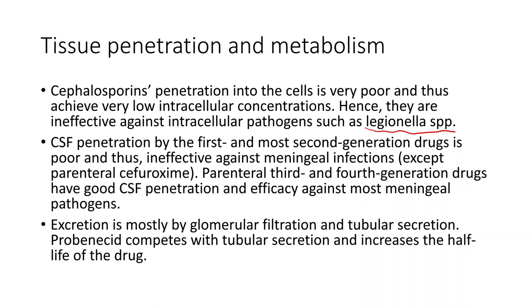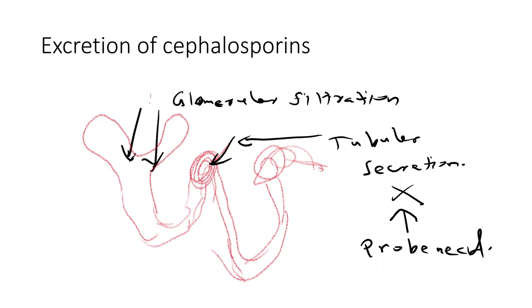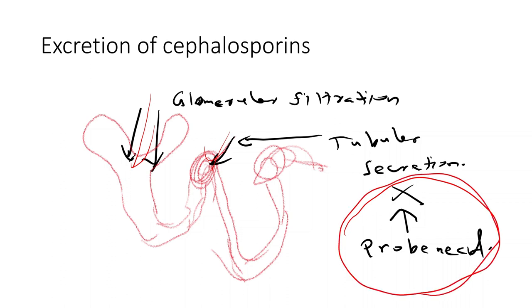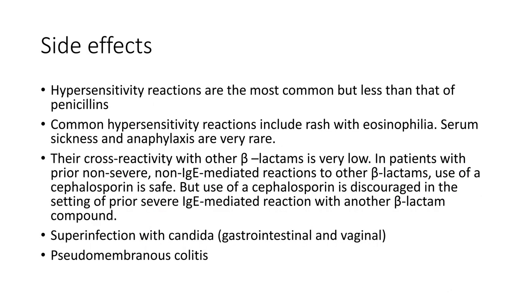Cephalosporins are excreted mainly by glomerular filtration and tubular secretion — they are mainly excreted by the kidneys. Tubular secretion can be blocked by probenecid. If you want to increase the serum concentration of cephalosporins, use probenecid — it will block tubular secretion so that only glomerular filtration is working, resulting in increased serum concentration and increased half-life of cephalosporins.